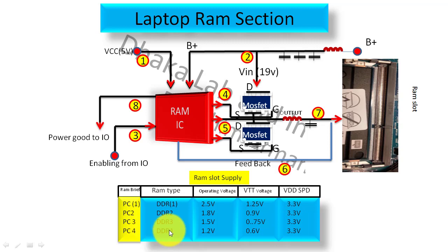For DDR4 RAM, PC4 will be the RAM's other name. For DDR4, operating voltage will be 1.2 volt and half will be VTT voltage, that's 0.6 volt, and VTT-SPD will be 3.3 volt. VTT-SPD will be same for all.